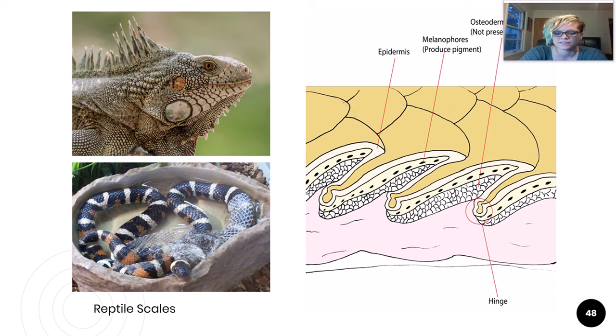Reptile scales are also formed from keratin, just like nails, and they are formed in the epidermis, unlike fish scales. Reptile scales have evolved to keep the animal from losing water since they live on dry land. Different types of scales serve different functions.